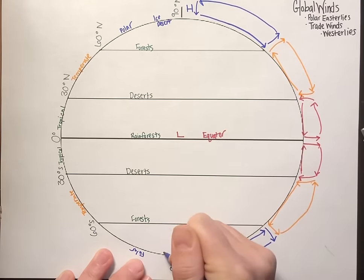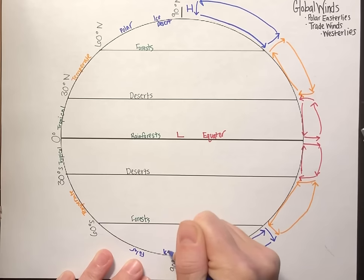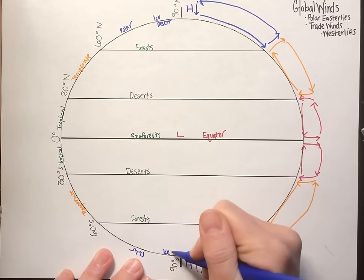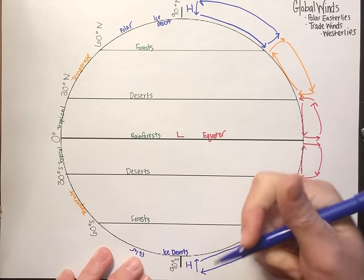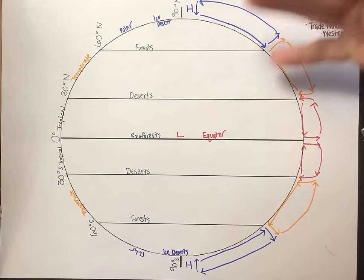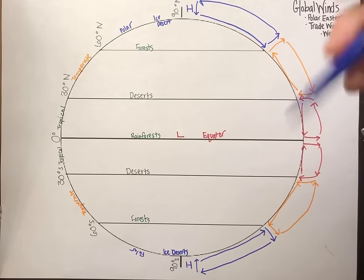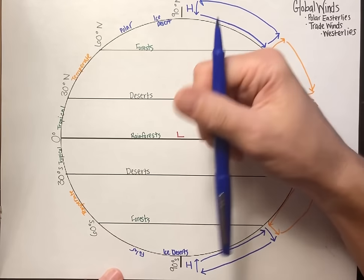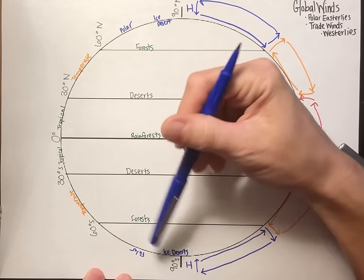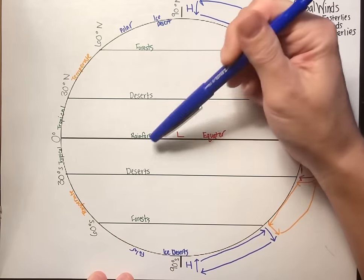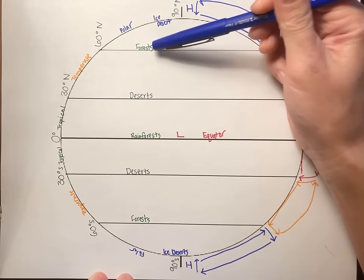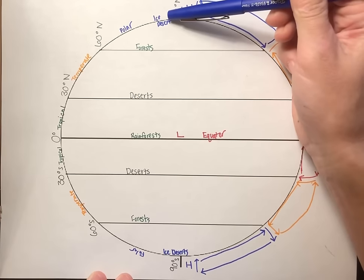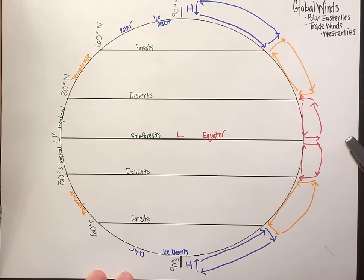Our planet has bands — latitudinal banding — because of the unequal heating of the earth. So looking at a map and ignoring the ocean, you'll see a repeating pattern: desert, forest, desert, forest, desert, forest, desert. Super cool.